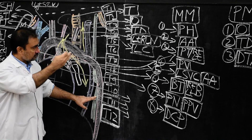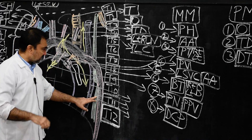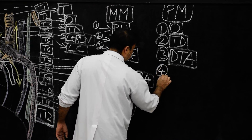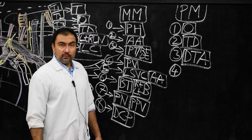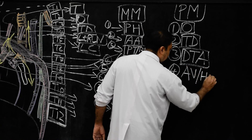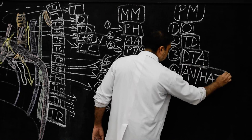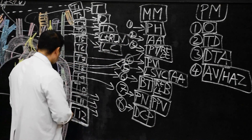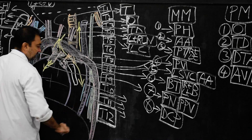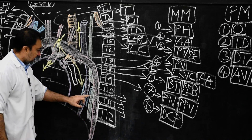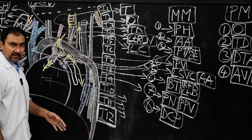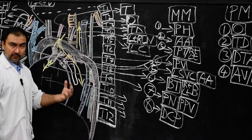These three structures are in the posterior mediastinum: esophagus, descending thoracic aorta, and thoracic duct. Structure number four, which is included along with them, will be the azygous veins and hemi-azygous veins. So four structures: esophagus, descending thoracic aorta, thoracic duct, and azygous and hemi-azygous veins — four perpendicular structures.